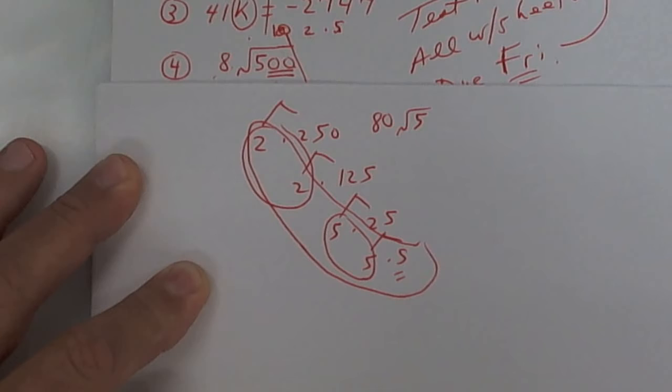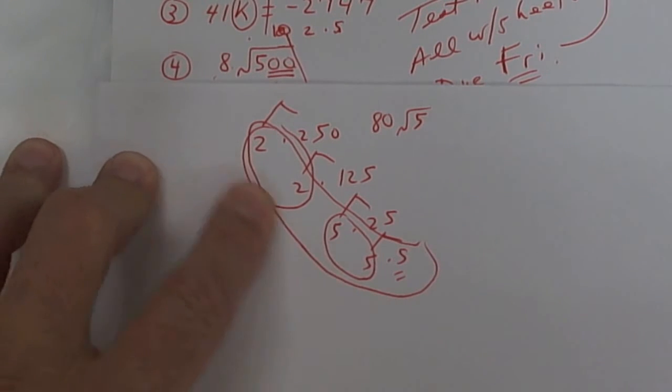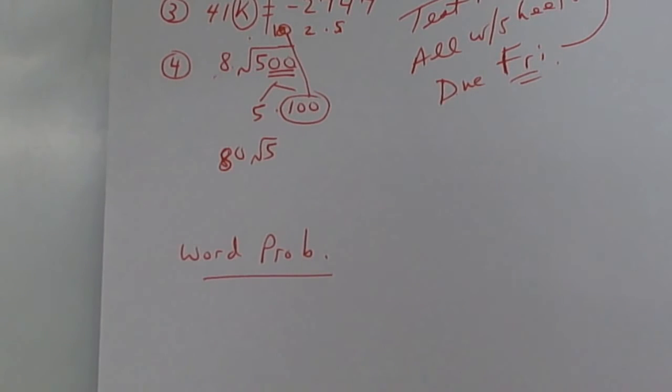You can break it down all the way, and if you have two of a kind, take one out. Again, this is called prime factorization. All right, let's take a look at a word problem from yesterday.